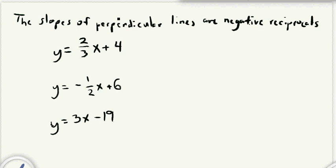We need to know that the slopes of perpendicular lines are negative reciprocals. That means we're going to flip the fraction, and they're going to change signs. So if they're positive, they're going to become negative. If they're negative, they're going to become positive. I've got three examples here, so we're going to look at those.